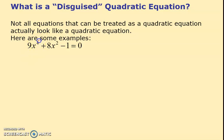So here's some examples. This doesn't look like a quadratic, it looks like x to the power of 4. But what you'll notice is that this power is double this power, the 4 is double the 2, and then there's no power at the end. So although it isn't a quadratic, we can pretend it's a quadratic.